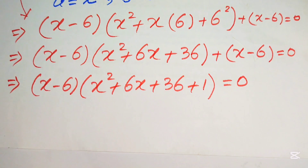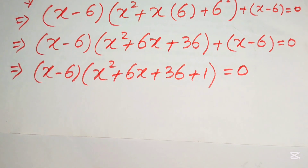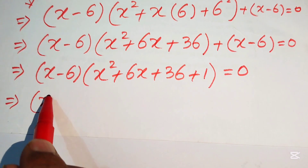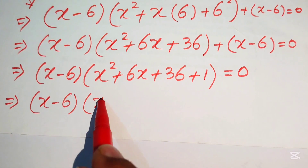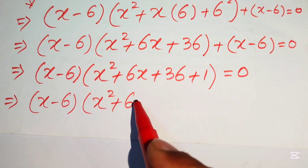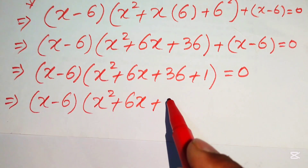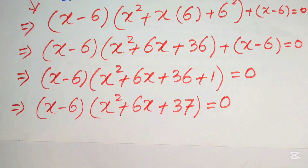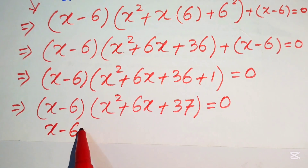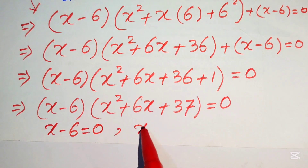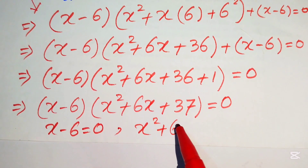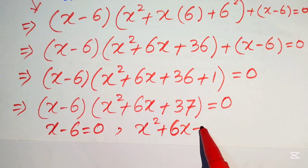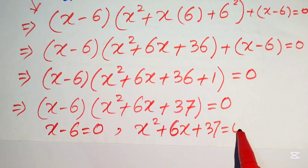Breaking this into two cases: the first equation is x minus 6 equals 0, and the second equation is x² plus 6x plus 37 equals 0.